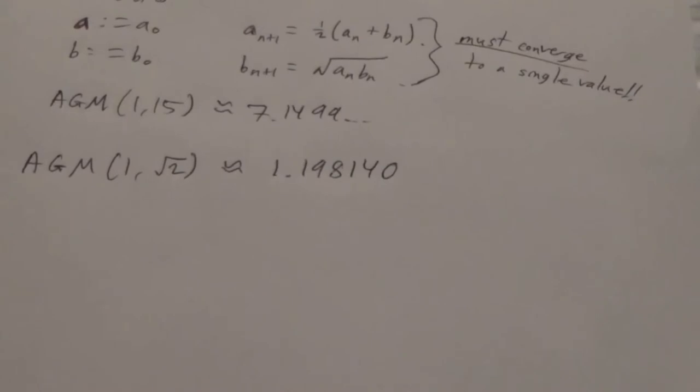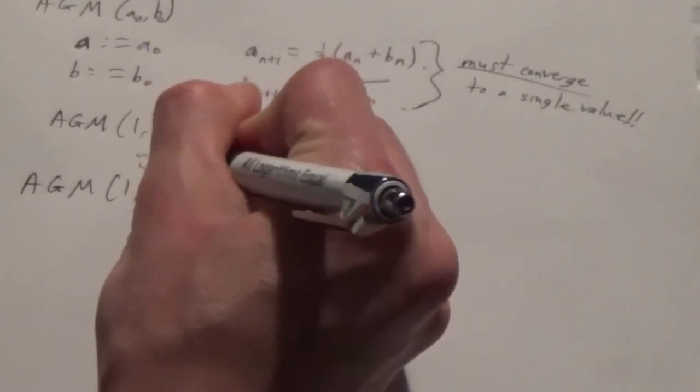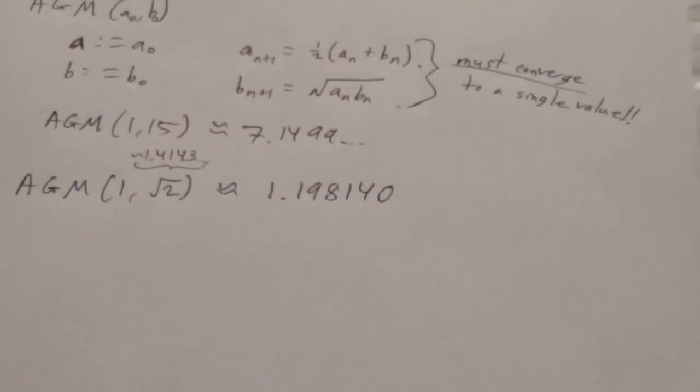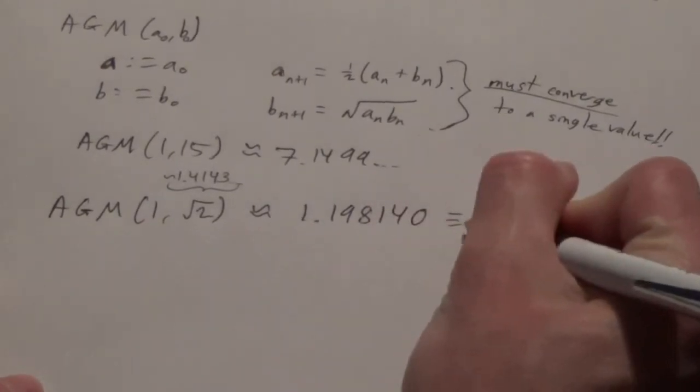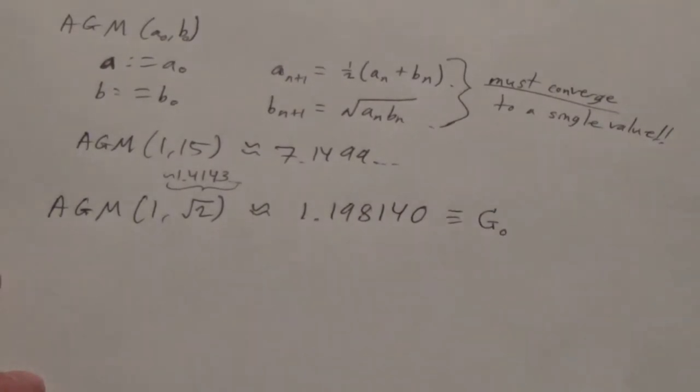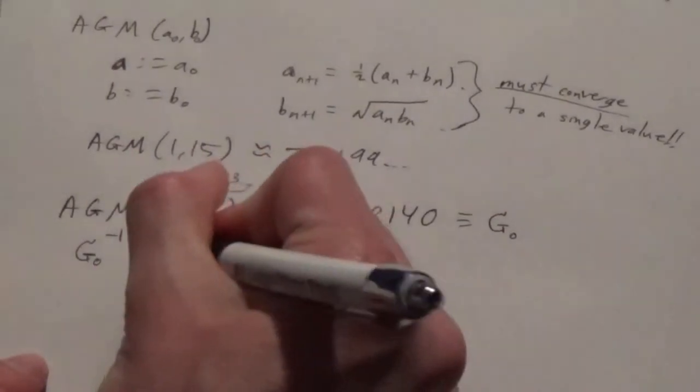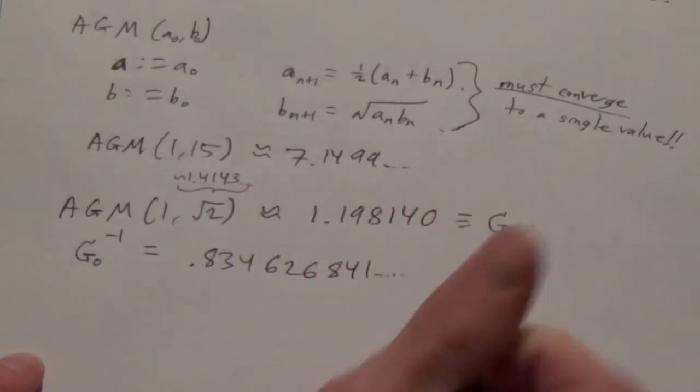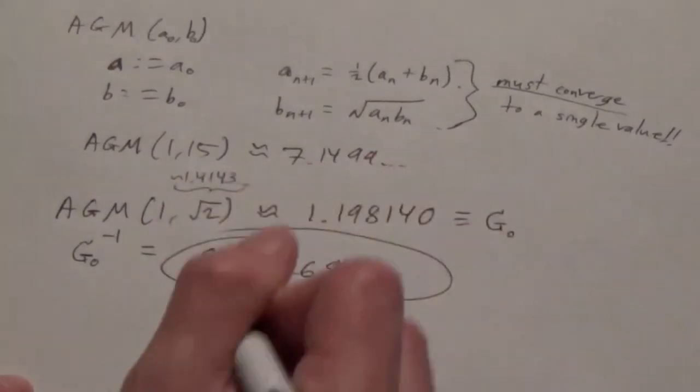So that is that arithmetic geometric mean. Now, square root of 2 is approximately 1.414. And so, if we take that number and take the reciprocal, what we end up with is 0.834626841, and it goes on. And this number is a very special number, and it is Gauss's constant.